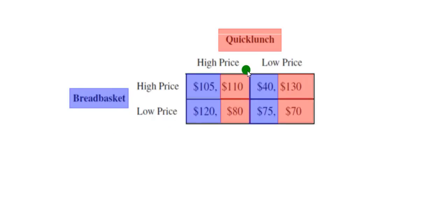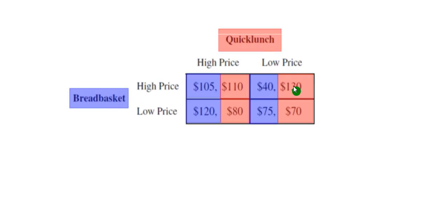When we look at Quick Lunch, we're not comparing vertically because they're the second entry — we compare horizontally. So we're comparing 110 with 130, and 80 with 70. If Bread Basket goes high, Quick Lunch would be better off going low, because 130 is better than 110. Now if Bread Basket goes low, Quick Lunch is better off going high because 80 is better than 70.